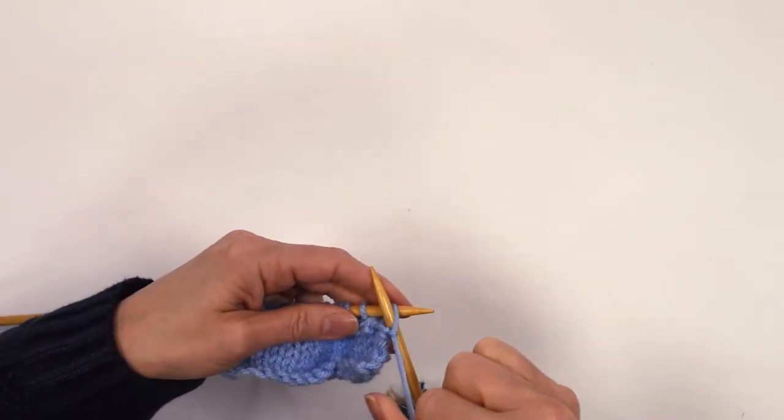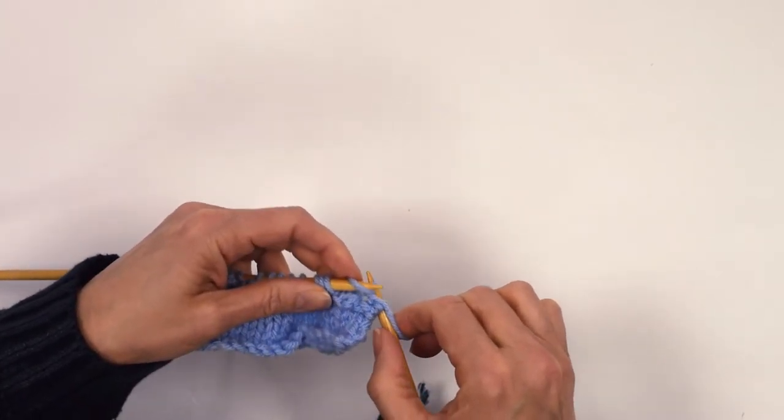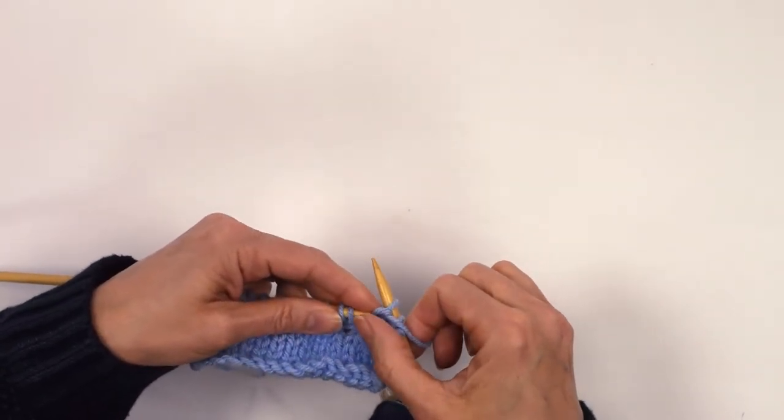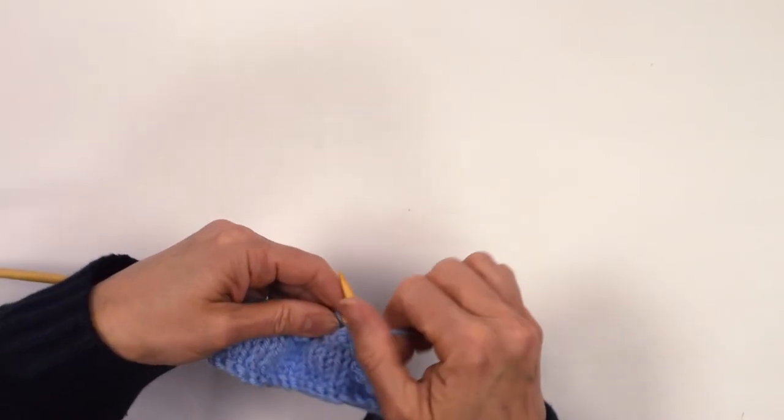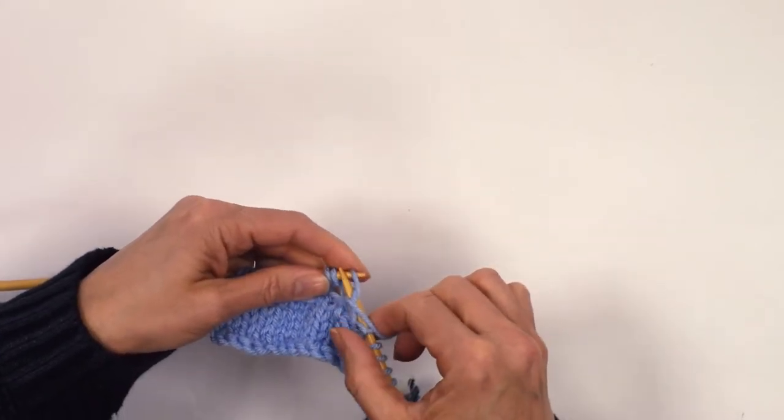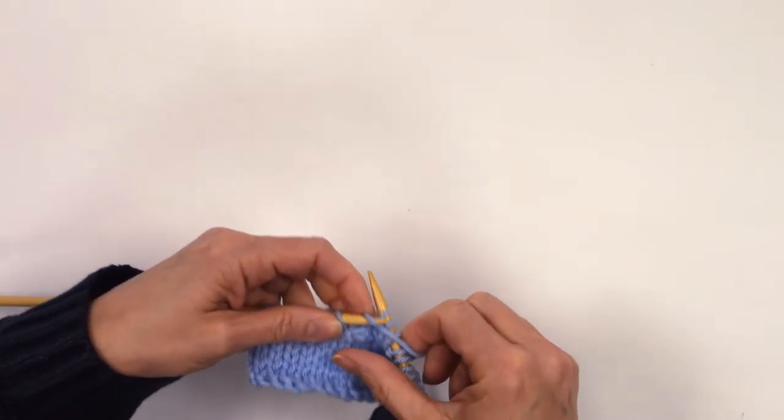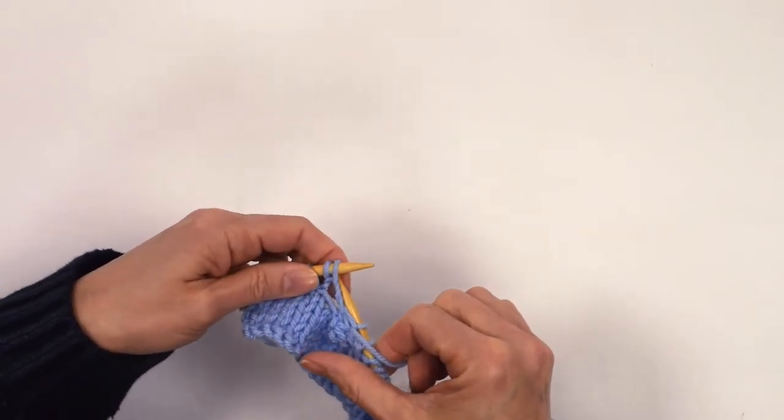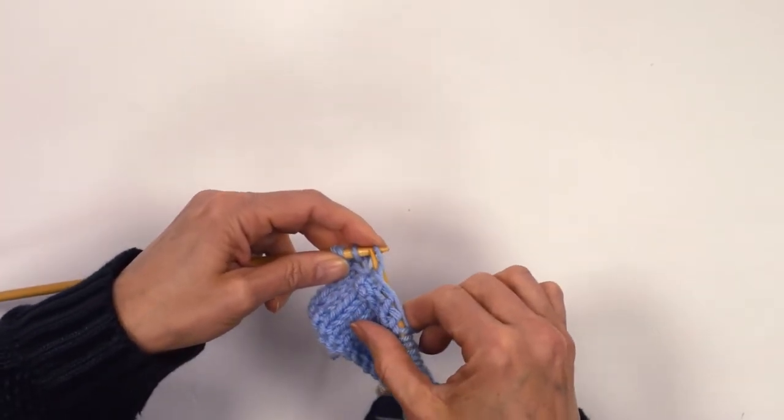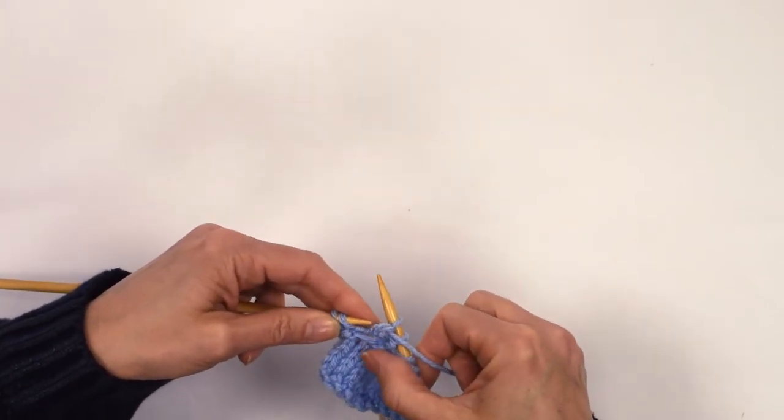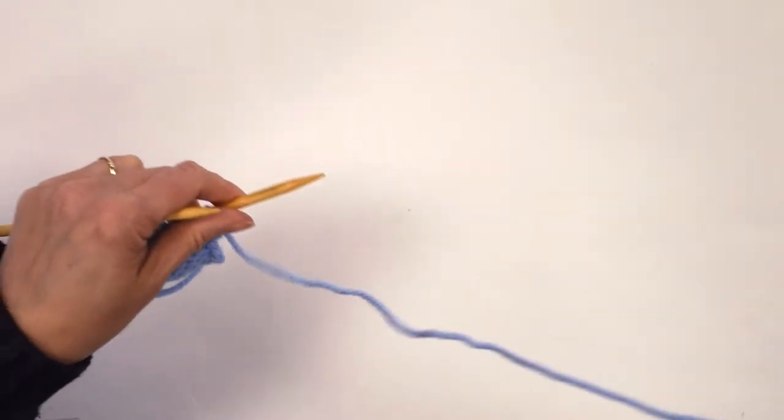Row three is a standard purl row, so you just purl carefully all your way across—that's the single stitch, all three of the stitches that are together. Next one, next three, so you haven't lost or gained any stitches over that row. You always end up with exactly the same number that you started with. So we're simply just purl to the end.